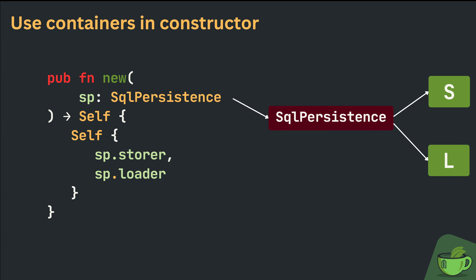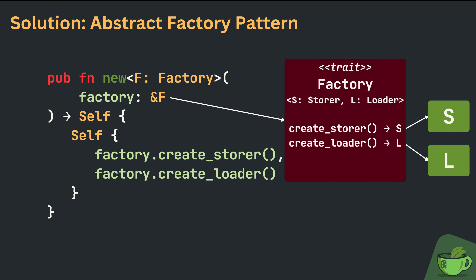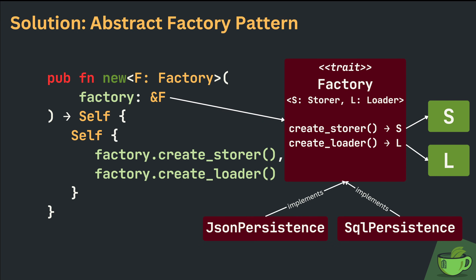But in Rust there's almost no problem that can't be fixed with traits. Instead of taking a concrete type as a parameter to the constructor method, we can make the method generic over a type F, which is constrained to implement a new trait called Factory. The Factory trait itself is generic over the same types S and L which the app needs — a Storer and a Loader — and it declares two factory methods to create those. This gives us back configurability, but with the constraint that we can only introduce consistent sets of Storer and Loader, which is exactly what we wanted.